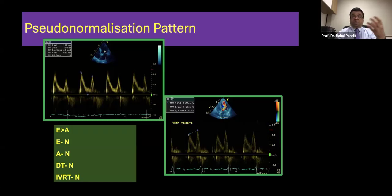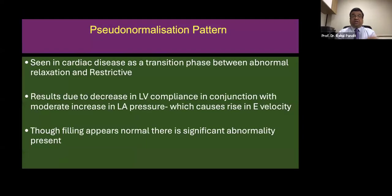Again, if I put the same thing in the words, what is happening is the ventricle is becoming more and more stiffer and there is now a pressure problem. So this transition is seen in cardiac diseases. It's a phase between abnormal relaxation and the severe form, which is a restrictive pattern. This is almost called as a stage 2 diastolic dysfunction.